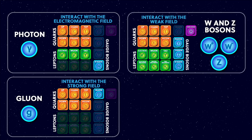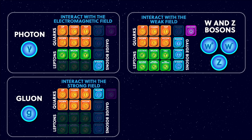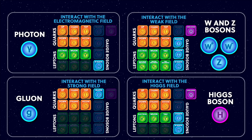The W and Z bosons are the force carriers for the weak force and have got very large masses, which they get from interacting with the Higgs field. The Z boson doesn't carry electric charge, so it only interacts with the weak force. But the W boson can have either a positive or negative electric charge, so it interacts with the electromagnetic force as well as the weak force. And finally we have the Higgs boson, which comes from the Higgs field. Particles get their masses from interacting with the Higgs field when they move through it, apart from the neutrinos — the neutrinos get their mass from some other mechanism which we haven't worked out yet, which is just one of our outstanding mysteries in particle physics.